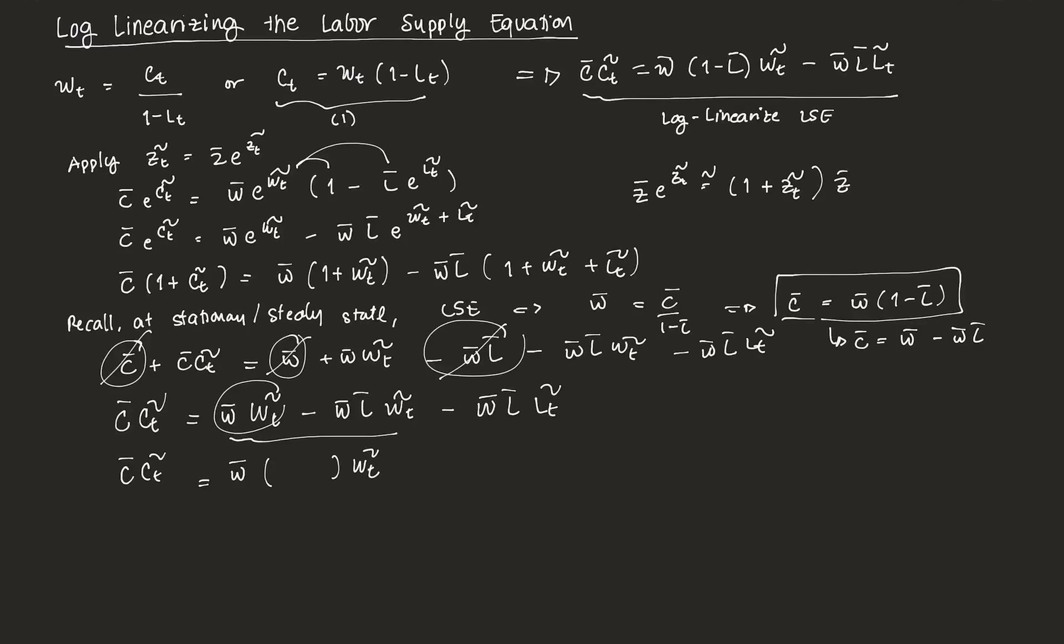So that's one minus this also has an L bar. So we get L bar, minus W bar L bar Lt tilde. And that's how we derive our labor supply equation in its log linearized form. And that's an example of how we do log linearization in an RBC model.